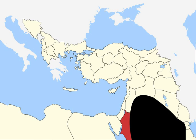1918, Ottomans repel the first Transjordan attack on Amman and second Transjordan attack on Shunet Nimran and As-Salt.